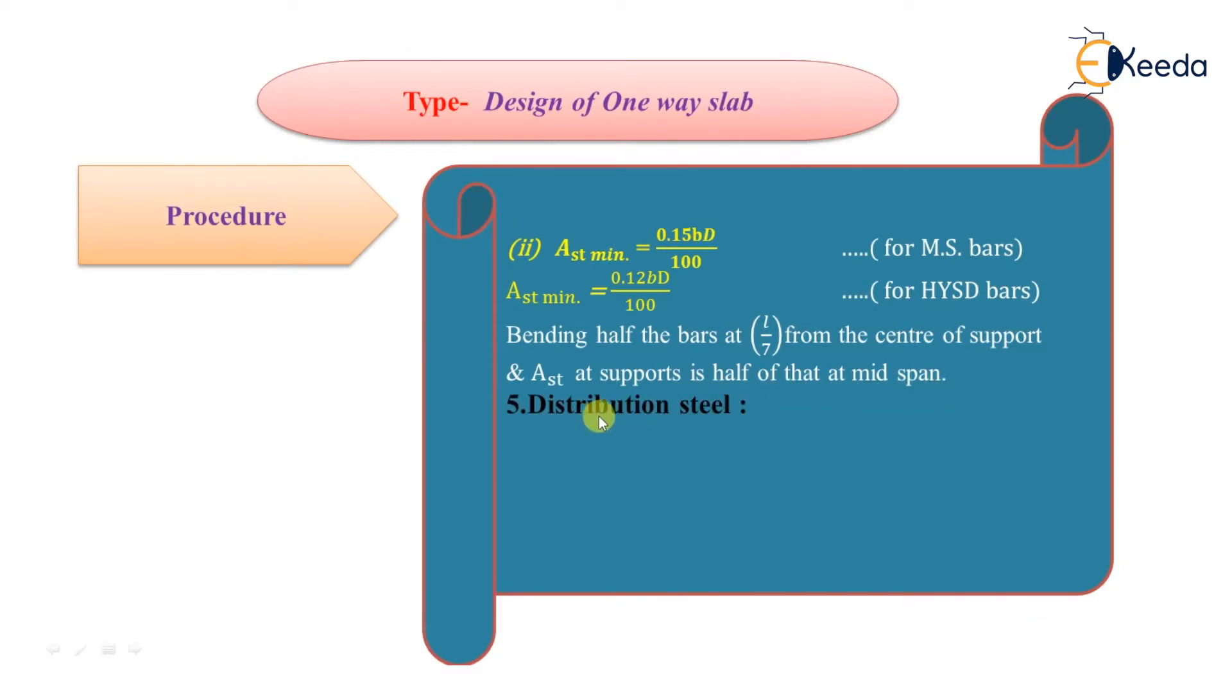Next step is to find out the distribution steel. The distribution reinforcement is provided in the longer span of one-way slab. This is steel as per the minimum reinforcement criteria given above.